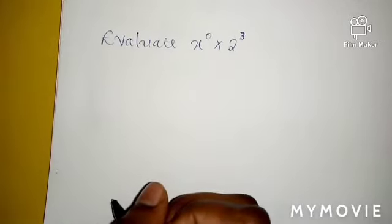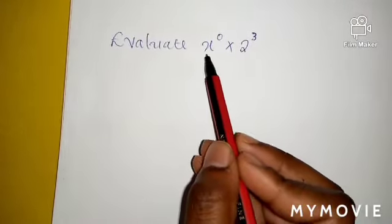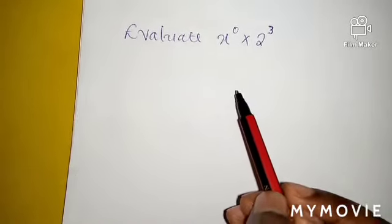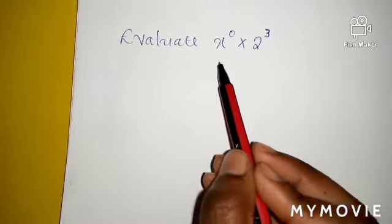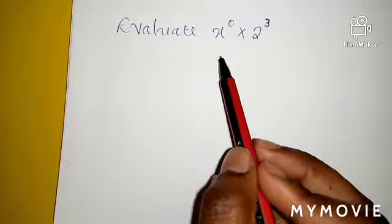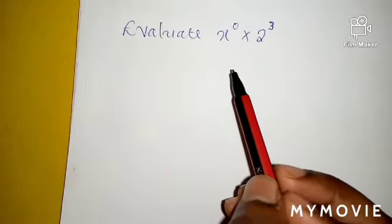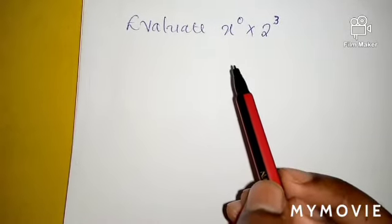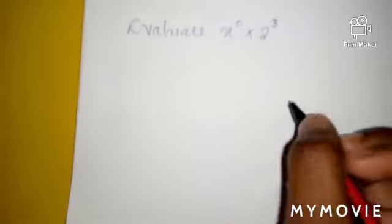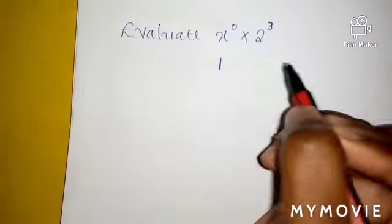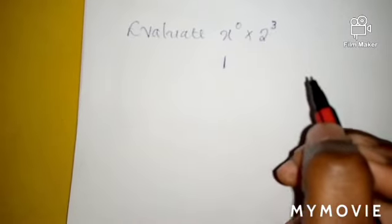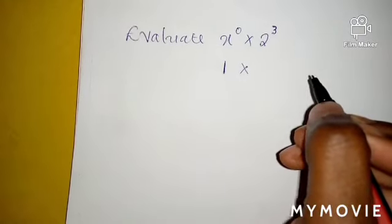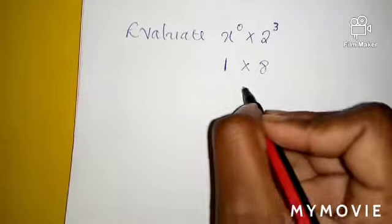Moving on, we know from the earlier question that anything raised to the power 0 is 1. But in this case, we've been given a variable x. Although it's a variable, x raised to the power 0 still gives us 1. So x to the power 0 is 1. Everything — whether y, whether z — raised to the power 0 always gives us 1. Then we multiply by 2 to the power 3, which is 8. So 1 times 8 is equal to 8.